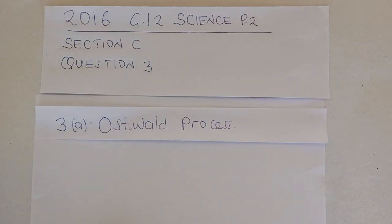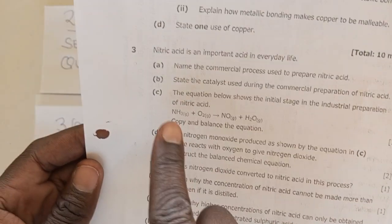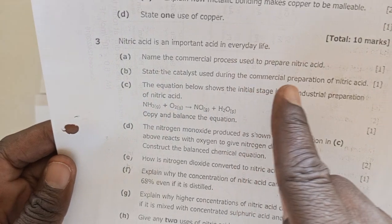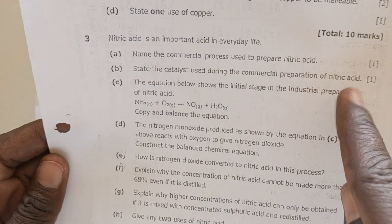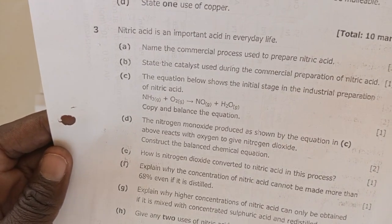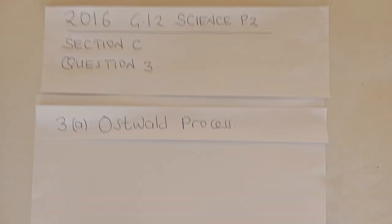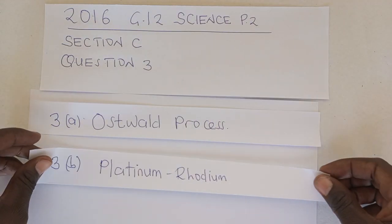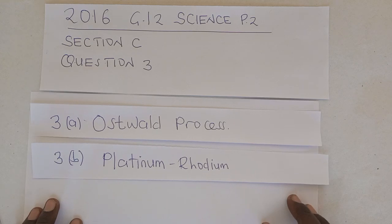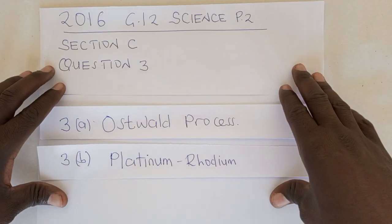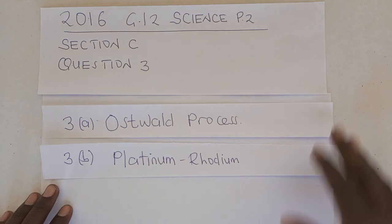And then we move on to question B. Question B reads: state the catalyst used during the commercial preparation of nitric acid. One mark allocated to that question. And remember in the previous video, we said that the catalyst that is used is platinum-rhodium. And this is basically an alloy, an alloy of platinum and rhodium. And this is the catalyst used.